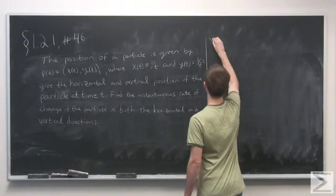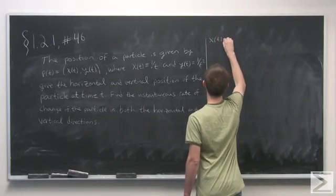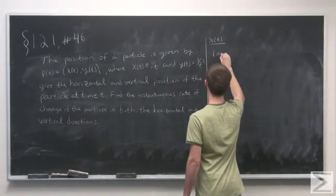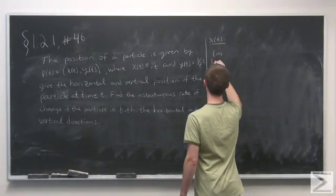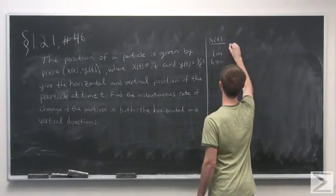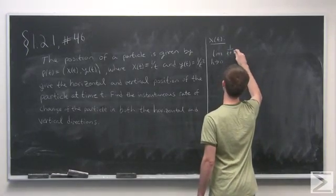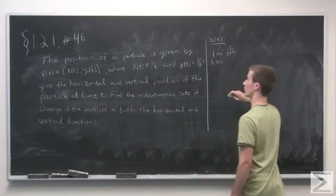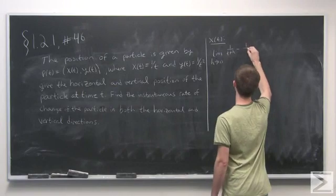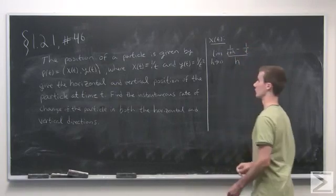The instantaneous rate of change of x of t is going to be the limit as h goes to 0 of x of t plus h. So that's 1 over t plus h, minus 1 over t, all over h.